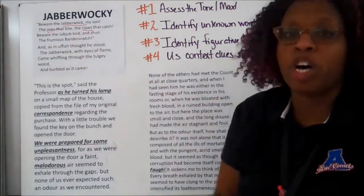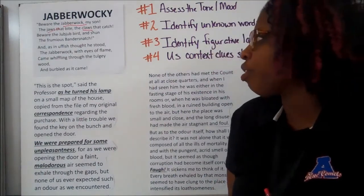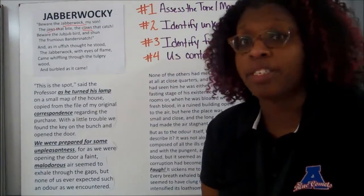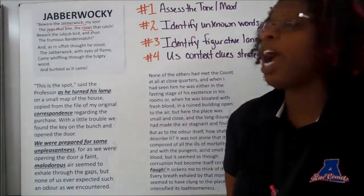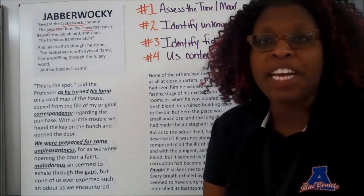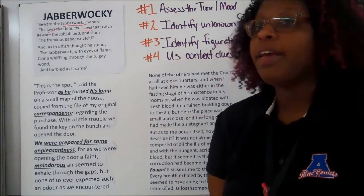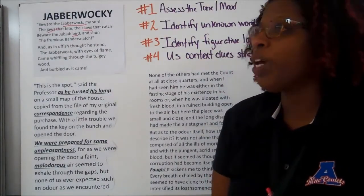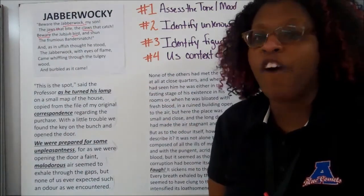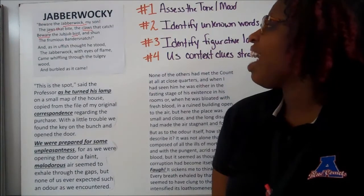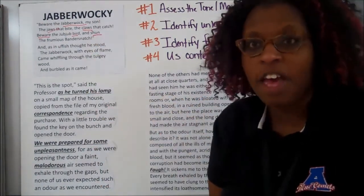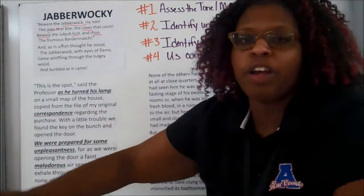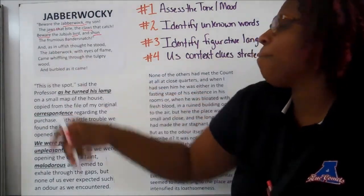'Beware the Jabberwock, my son' — this is some type of plea from a father to a son. The tone the author is giving off is one where he wants his son to be safe, so he's giving him information about this Jabberwock. Then he goes on to tell the son to beware of the jub-jub bird. We don't know what a jub-jub is, but we do know it's a bird, so it can fly and probably has wings — and it's still something dangerous. 'Shun' has a lot of negative connotative feelings; shun means to ignore or set aside.